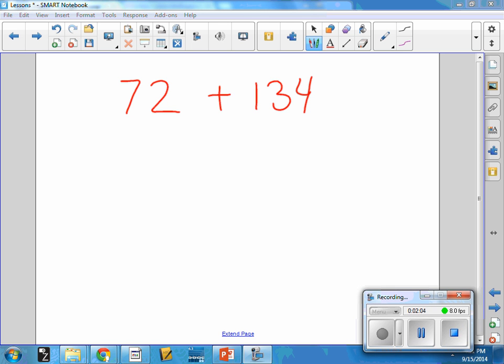And sticker notation was a strategy that they learned in second grade where a square or a sheet represents 100. A strip represents 10. And a circle is a single, which represents one.